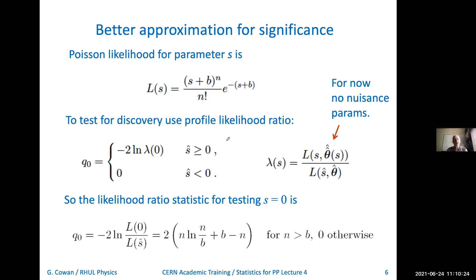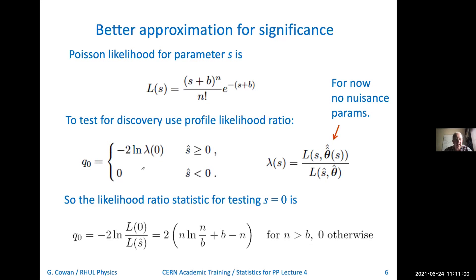The likelihood function as a function of the parameter s is just given by the Poisson distribution with a mean of s plus b. Since I want to test the hypothesis of s equals zero, I can use the profile likelihood ratio statistic — minus two log of the likelihood ratio. I'll only assign q0 equal to minus two log lambda if I see an excess of events over the background, i.e., if the estimate of the signal rate comes up positive. If I see fewer events than expected by background alone, so s-hat comes out negative, I'll assign a value of zero to the statistic.